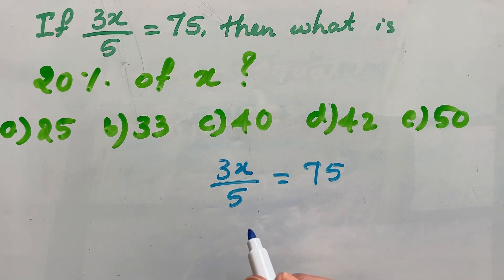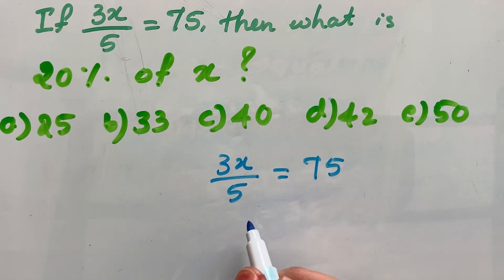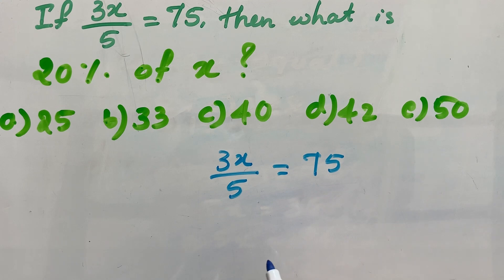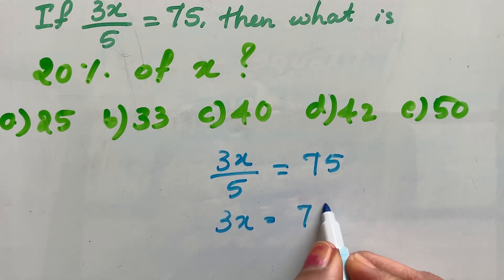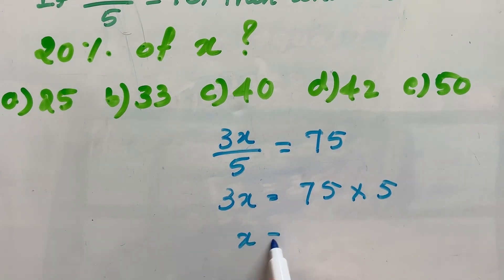To find x, let me solve this equation first. So, 3x over 5 is equal to 75. That means 3x is equal to 75 times 5. x is equal to 75 times 5 divided by 3.